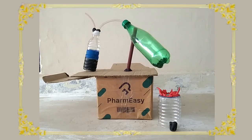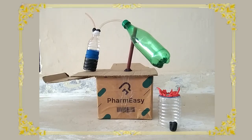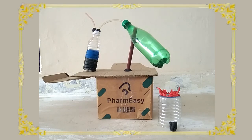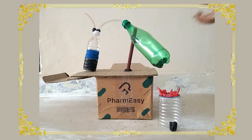Here we have completed our destructive distillation process. The coal is used as a fuel to cook. Earlier it was used in railway engines. And then it is used in thermal power plants to produce energy. Coal, diamond, graphite — all those things are some important fuels used to produce electricity. It is also used in various industries. From the process of destructive distillation, we get coke, coal tar and coal gas. This is the process of destructive distillation. Thank you.